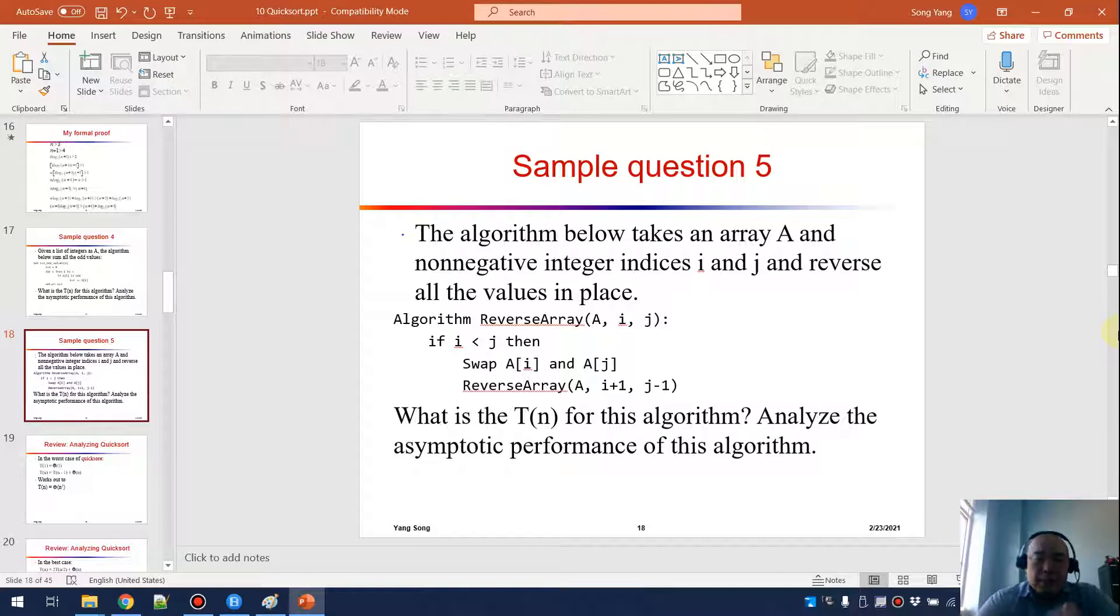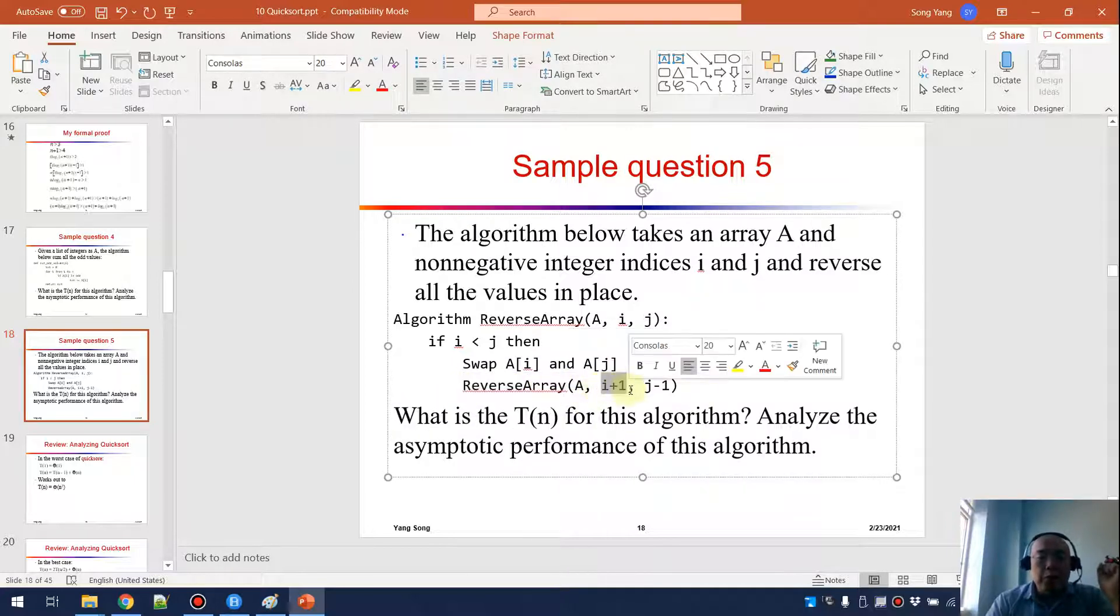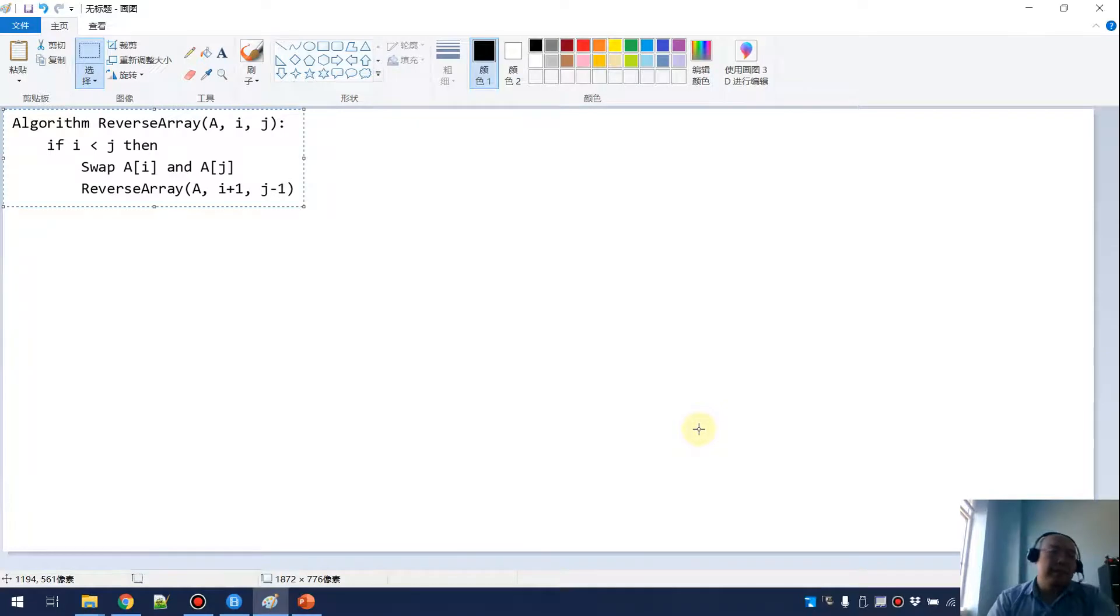For the next one, this is a recursive algorithm. This algorithm takes an array A and then it specifies I and J saying where to begin, where to end. As long as I is still smaller than J, then it wants to swap the value on index I and the value on index J. So we want to do a swap, and after that, we want to continue this reverse by doing a recursion. We're still doing the reverse array, but now I want to move the I cursor up by one and the J cursor down by one. The requirement is what's the T(n) and then analyze the asymptotic performance of this algorithm. I didn't specify use the substitution or iteration or the master theorem, so you can decide whichever you want to use. Let me grab this code.